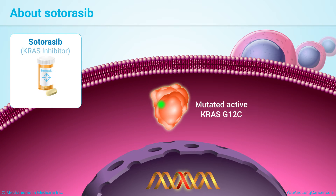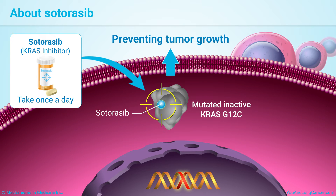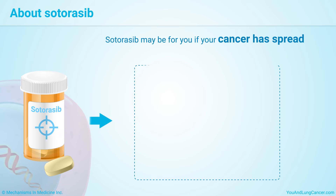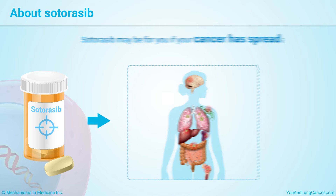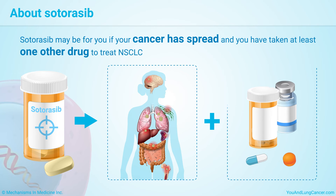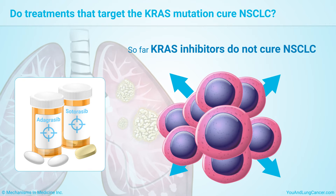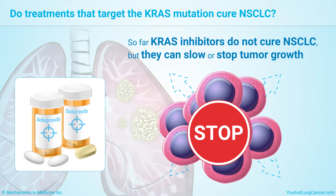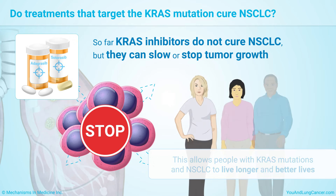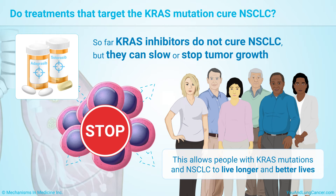Sodoracib is another KRAS inhibitor. You take this as a pill once a day. It can shrink tumors like adagrasib. Sodoracib may be for you if you have a KRAS G12C mutation, your cancer has spread, and you have taken at least one other drug to treat non-small cell lung cancer. So far, the KRAS inhibitors do not cure non-small cell lung cancer, but these drugs can slow or stop tumor growth, at least temporarily. This allows people with KRAS mutations and non-small cell lung cancer to live longer and better lives.